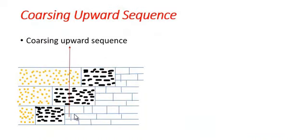During progradation, coarsening upward sequence form. Limestone is finer than shale and shale is finer than sandstone, so coarsening upward sequence form during progradation.